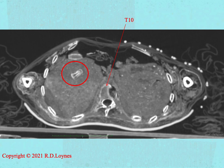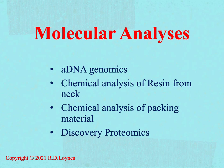The next feature of the skeleton to help us in Takabuti's case is the opportunity it gave us to collect very small samples for other investigations. We were able to identify several areas of the body which would yield very small samples of tissue to be used in laboratory analyses, such as ancient DNA genomics, chemical analysis of the resin around the neck, analysis of the packing material within the trunk, and ultra-modern analysis of the protein structure of the muscles at the back of the thigh. All these other analyses are the subject of other lectures. One of the groundbreaking methods used was the harvesting of these samples by a minimally invasive technique.